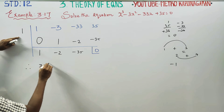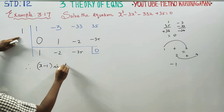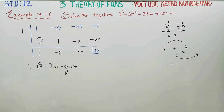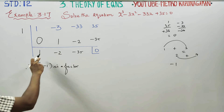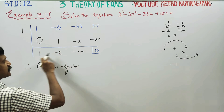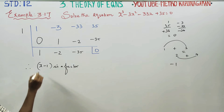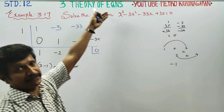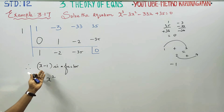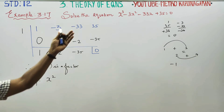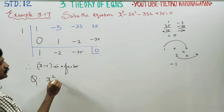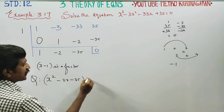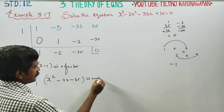Therefore, x - 1 is a factor. From the quotient obtained, x² - 2x - 35 is another factor to be further factorized.